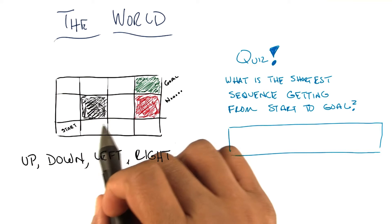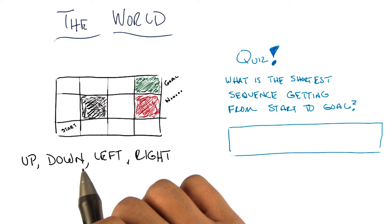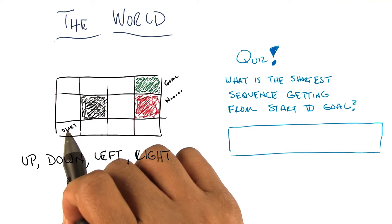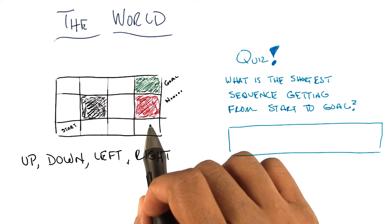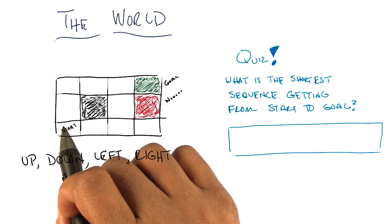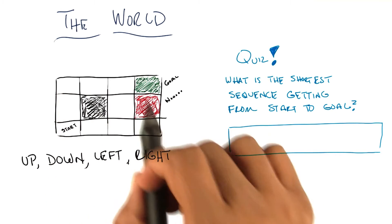Now this particular world is a three by four grid. So you have one comma one, two comma one, three comma one, four comma one. You have one comma two, one comma three, and so on and so forth.